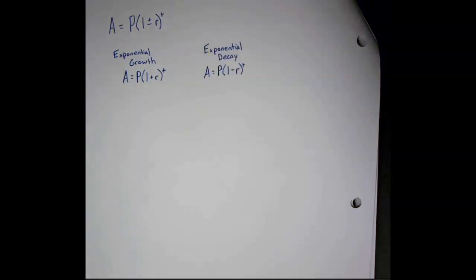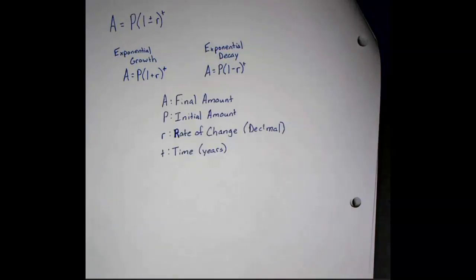When looking at both of these, they each have the same variables, and those variables are going to mean this. A is going to be your final amount. P is going to be the initial amount. R will be the rate of change, and we're always going to have that as a decimal.